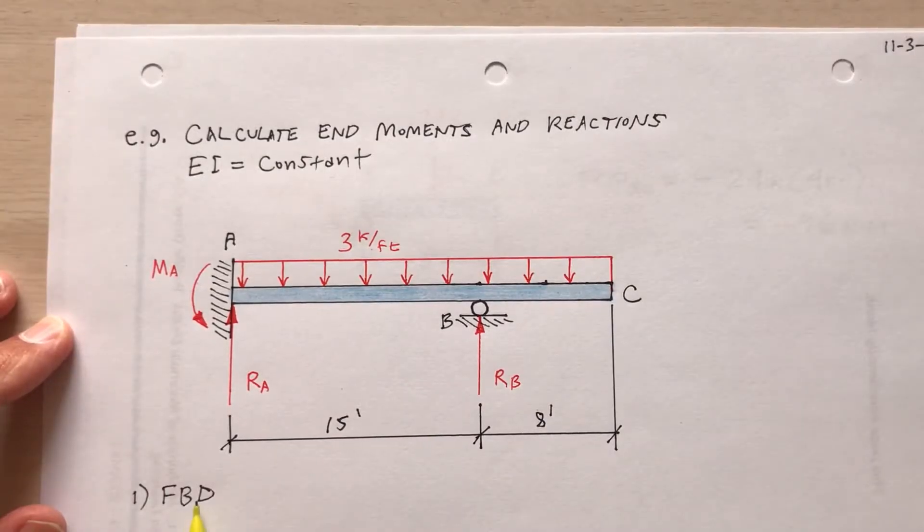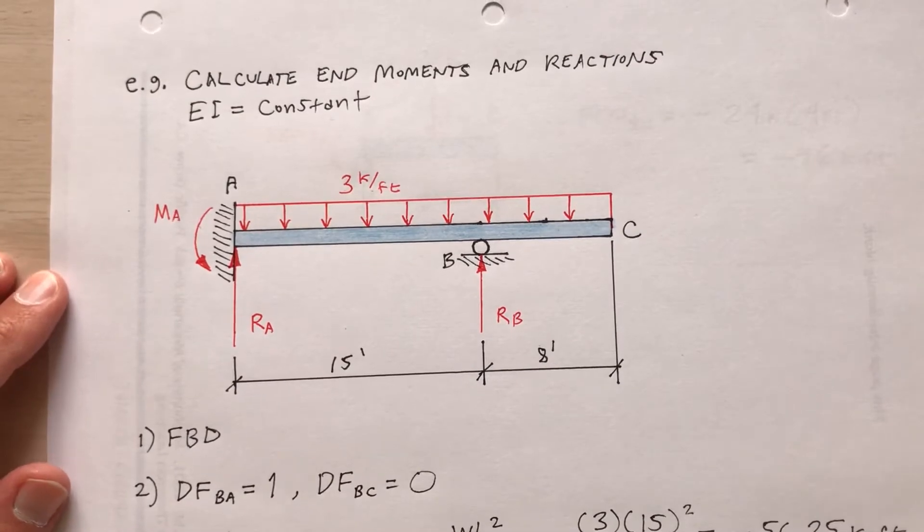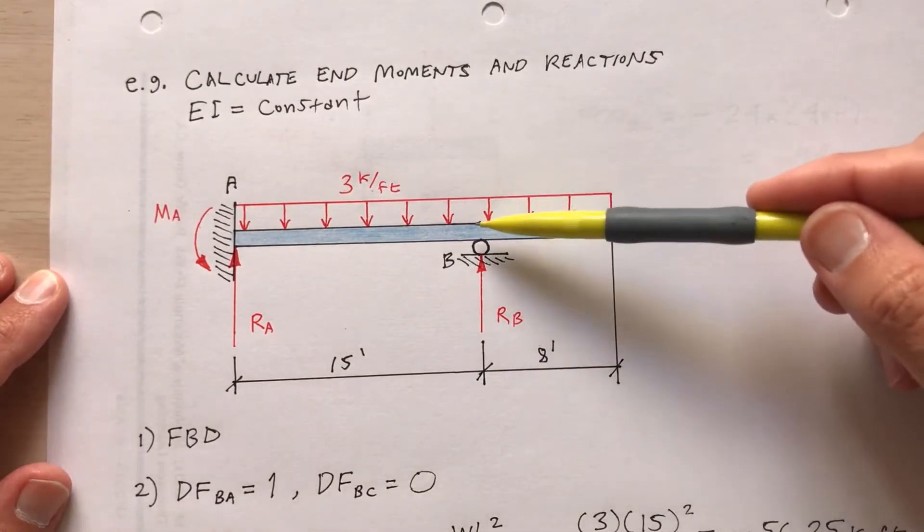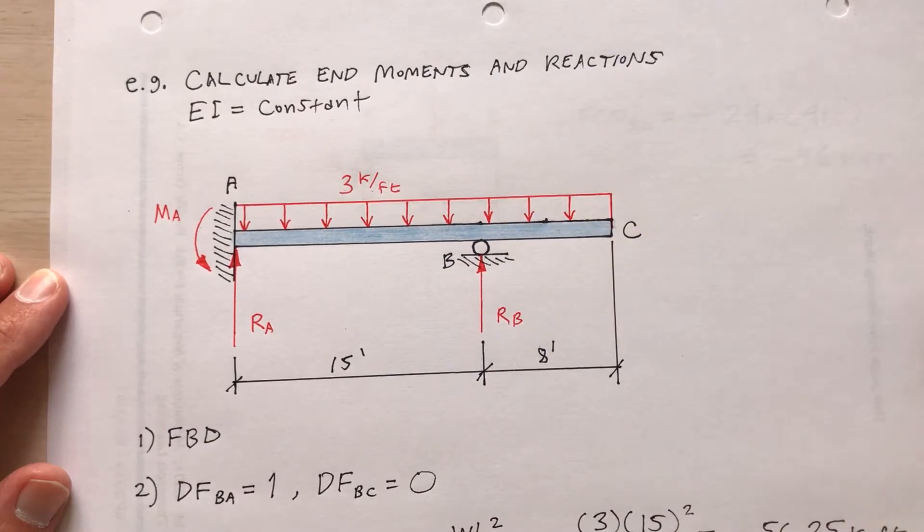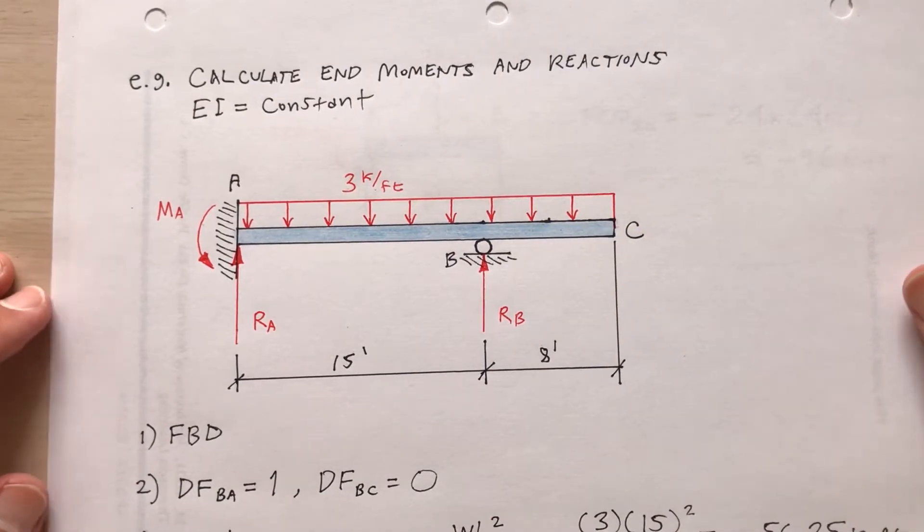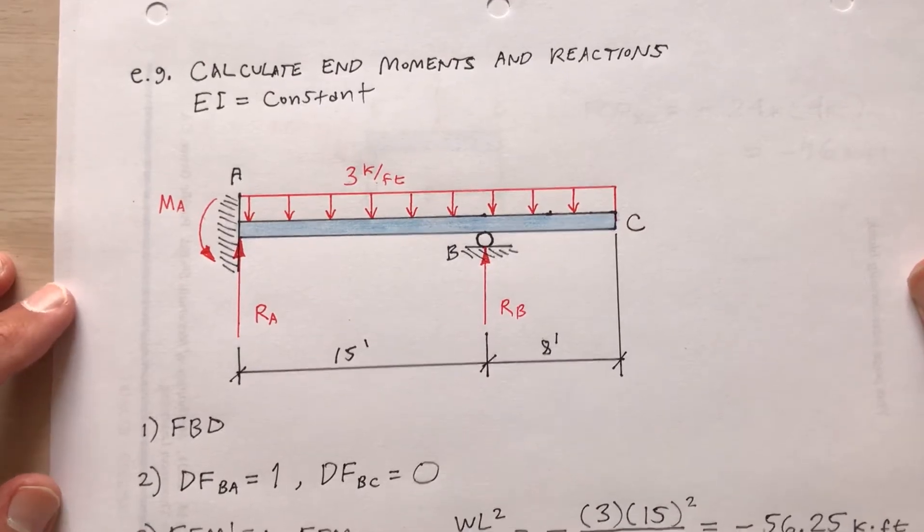Step one is to draw the free body diagram, that's what I just did. Step two: the distribution factor B to A is one on this side. Now BC is zero because I've got that overhang. So distribution factor to BA all of it, 100 percent, and then to BC zero.